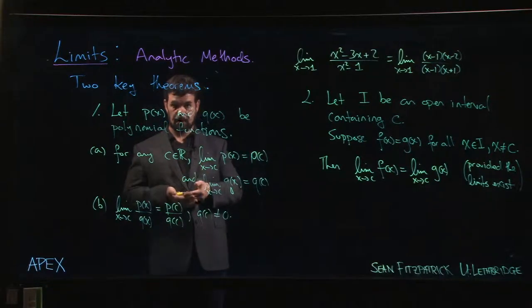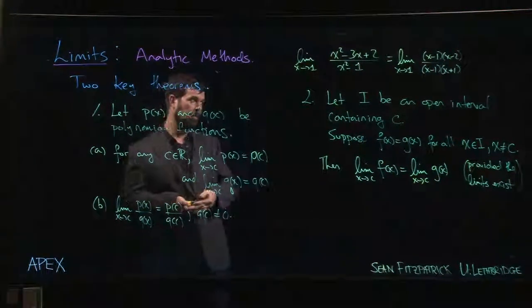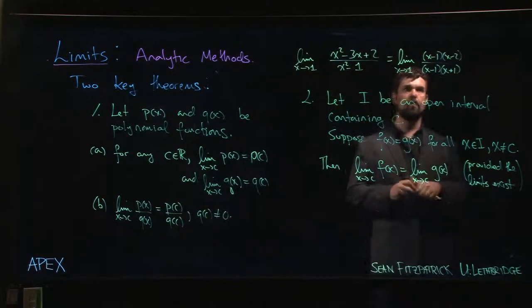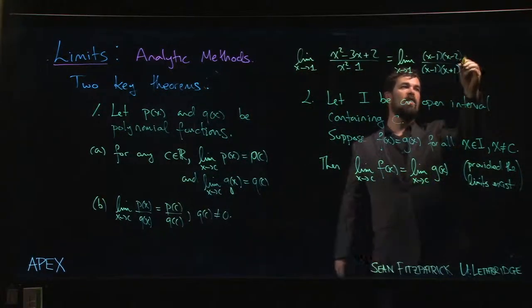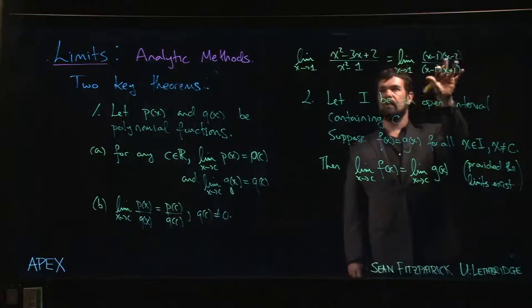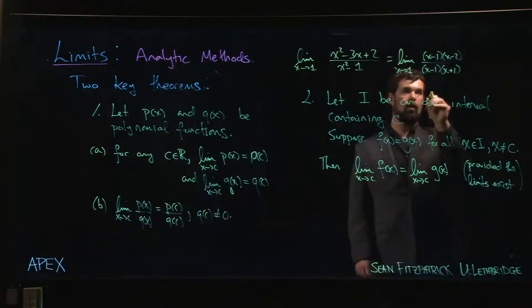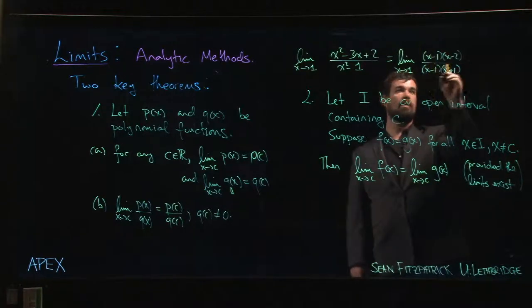That's what the theorem says, and that's important because in this case here, a function which agrees with this one at every point except X equals one is the one you obtain by canceling these two factors.